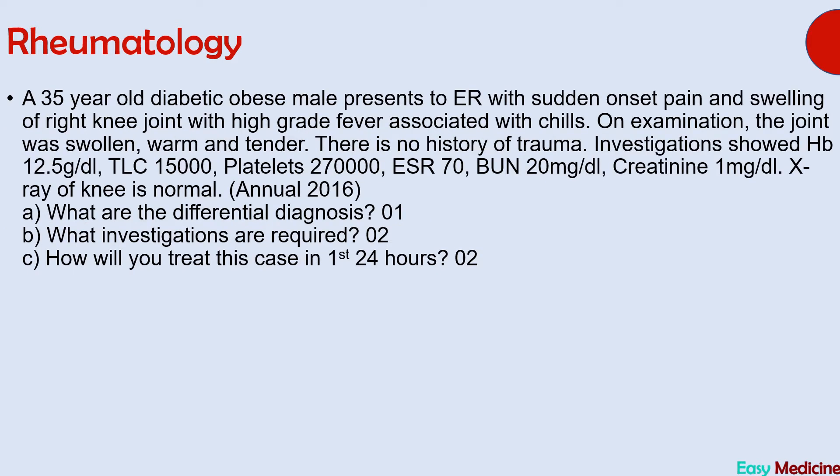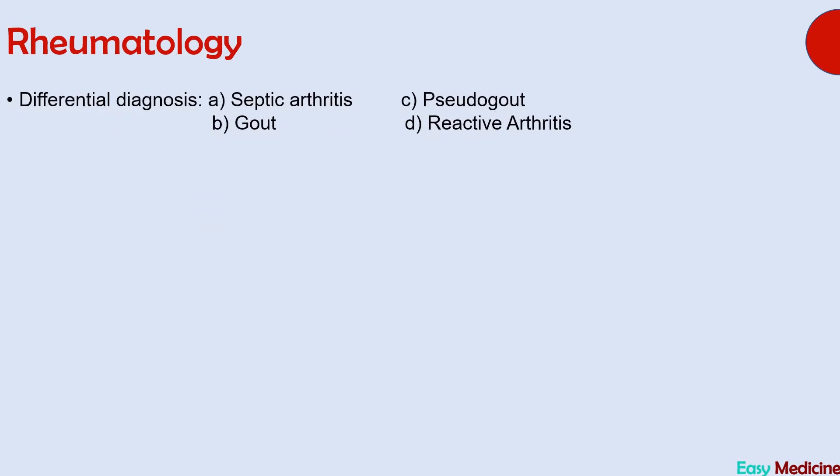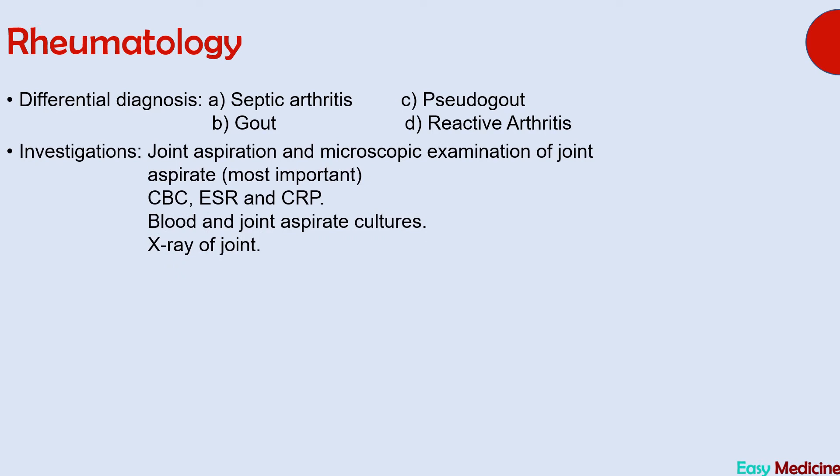The next question asks about differential diagnosis for sudden-onset monoarthritis. The diseases that can cause acute-onset monoarthritis are: septic arthritis, pseudogout, gout, and reactive arthritis. The most important investigation is joint aspiration and microscopic examination of the joint aspirate — this is key to making the diagnosis. Other investigations include CBC, ESR, CRP, blood and joint aspirate cultures, and X-ray of the joint.